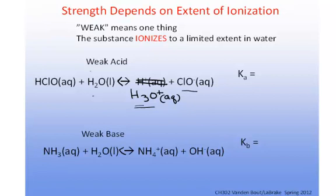That is, the equilibrium lies far to the reactant side. Here's an example of a weak acid, hypochlorous acid. When placed in water, it will ionize to a limited extent to give the hydronium ion plus the hypochlorite anion.